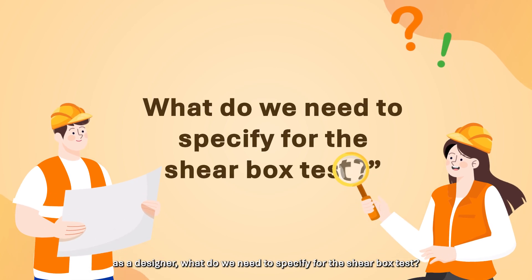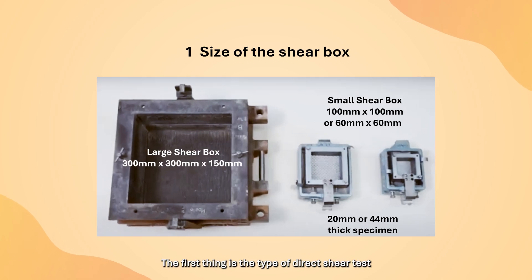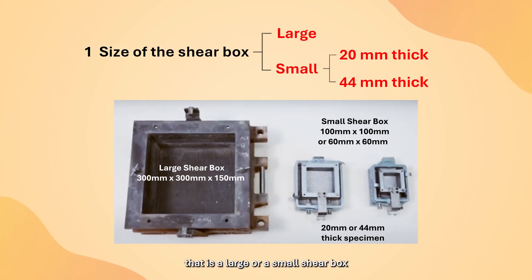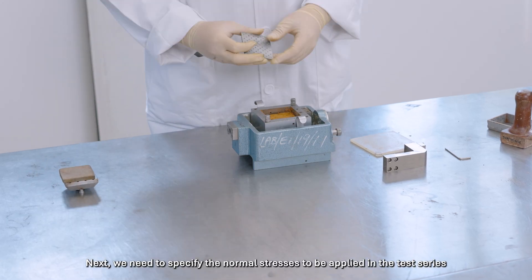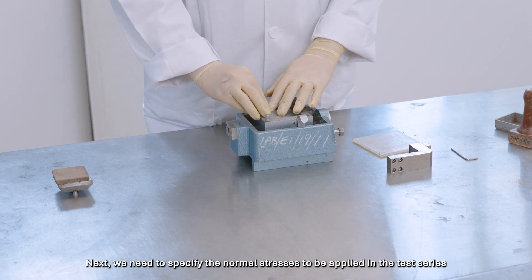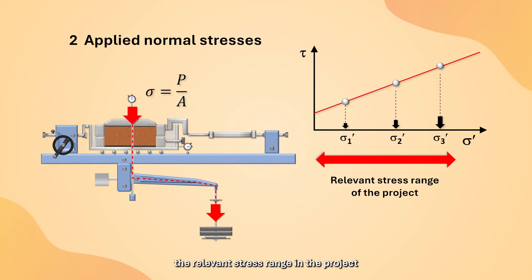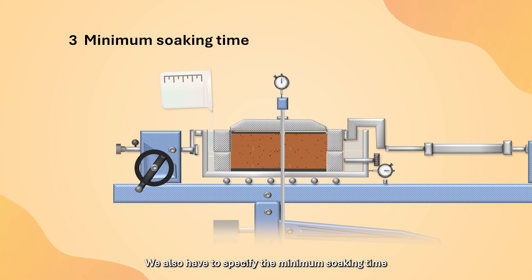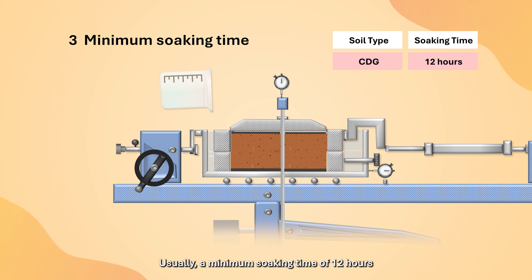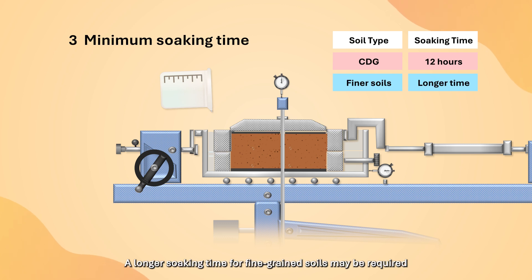As a designer, what do we need to specify for the shear box test? The first thing is the type of direct shear test — a large or small shear box. If the small shear box is to be used, we need to specify whether a 44mm thick or 20mm thick specimen is to be prepared. Next, we need to specify the normal stresses to be applied in the test series, considering the relevant stress range in the project. We also have to specify the minimum soaking time. Usually, a minimum soaking time of 12 hours is adequate for most completely decomposed granites, though a longer soaking time for fine-grained soils may be required.